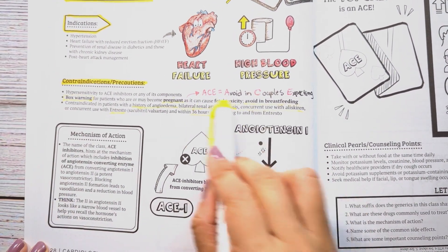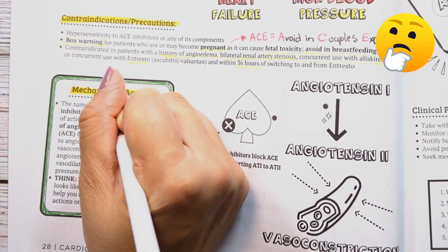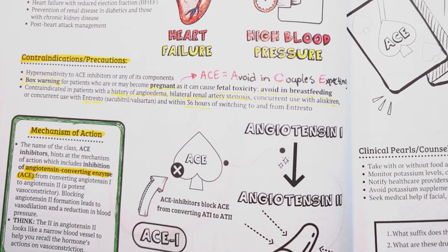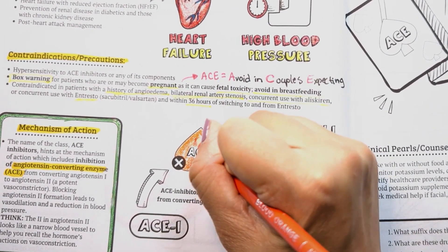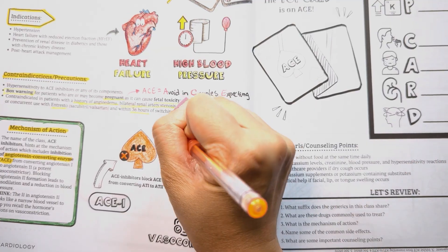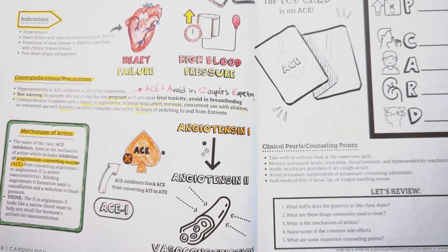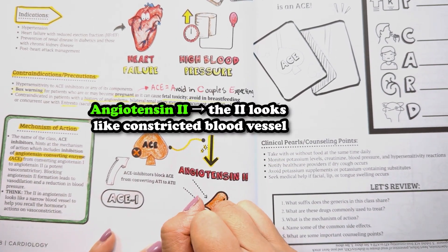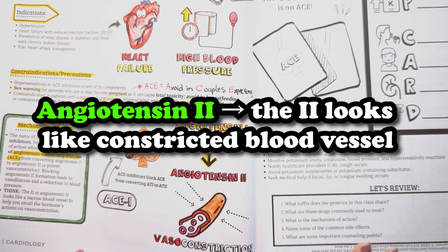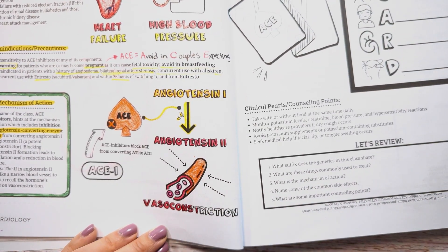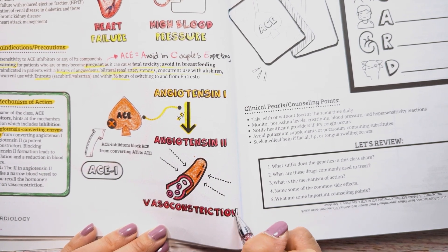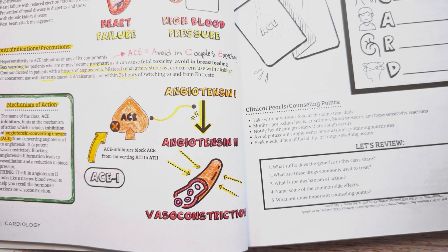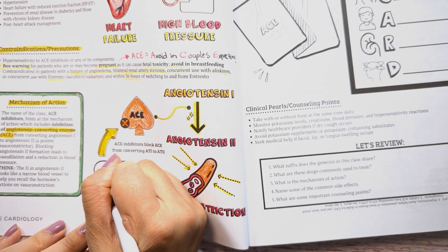But how do ACE inhibitors work? ACE stands for angiotensin converting enzyme. ACE is an enzyme that converts angiotensin 1 to angiotensin 2, a potent vasoconstrictor. So if we inhibit ACE, it will also block angiotensin 2 formation, leading to vasodilation and reduction in blood pressure. Angiotensin 2 is a hormone that causes vasoconstriction — you can think of the Roman numeral 2 in angiotensin 2 as looking like a narrow blood vessel to help you recall the hormone's action. ACE inhibitors block the formation of this hormone by blocking the enzyme that converts it.